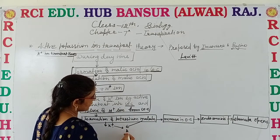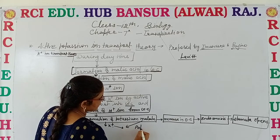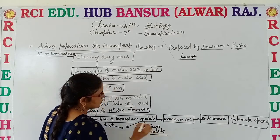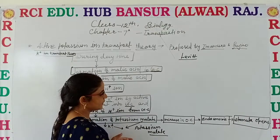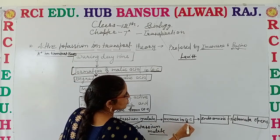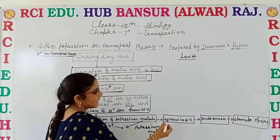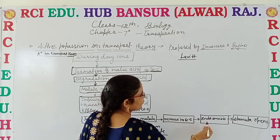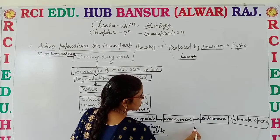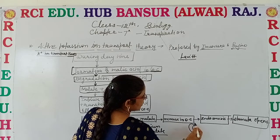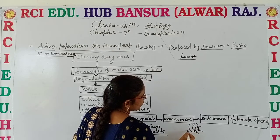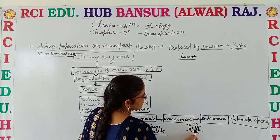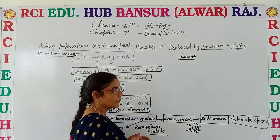these K+ ions combine with the malate and form potassium malate. Due to the formation of potassium malate, the osmotic concentration of the guard cell increases. And when osmotic concentration of the guard cell increases, a process of endosmosis takes place. Due to the endosmosis, the guard cell becomes turgid due to the entry of water.